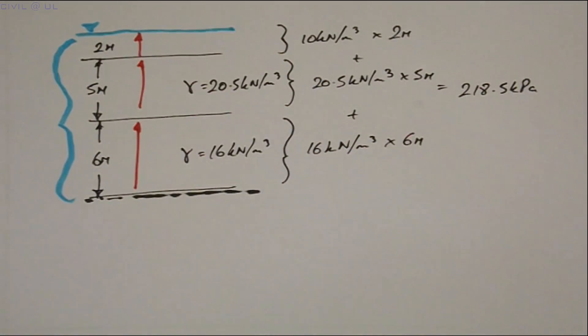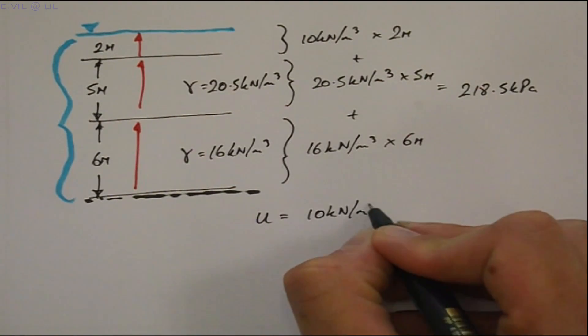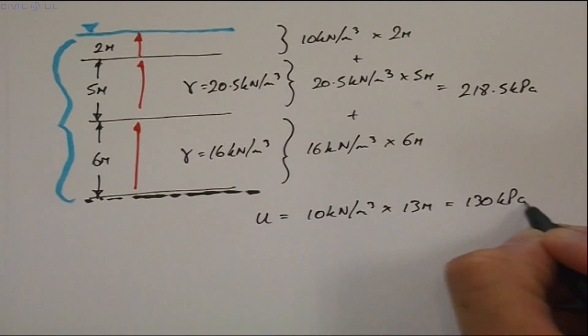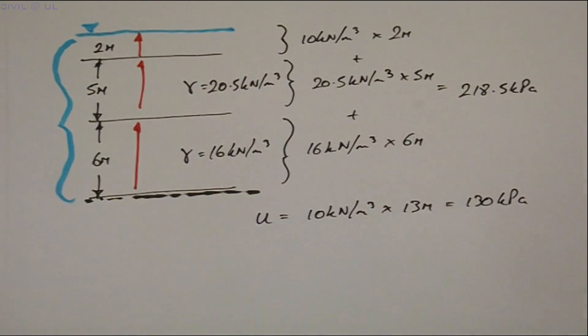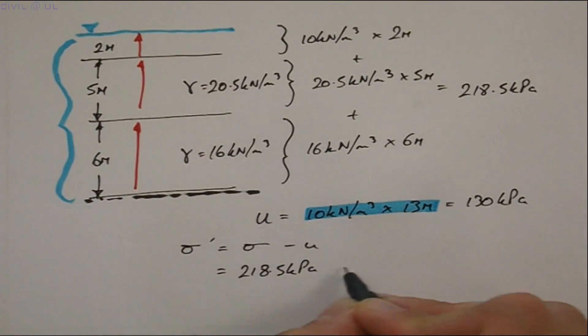The pore water pressure in this case is equal to 10 multiplied by the depth of water, 13 meters. Giving a result of 130 kPa. Subtracting these gives us our effective stress which turns out to be 88.5 kPa.